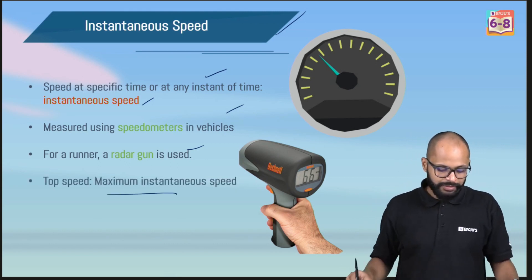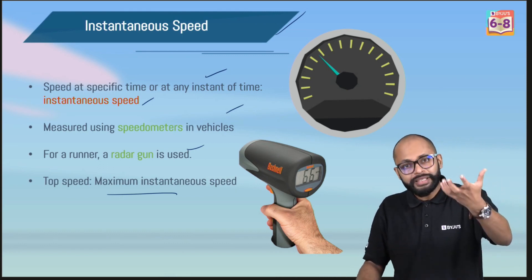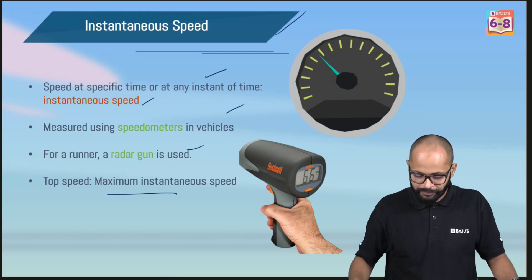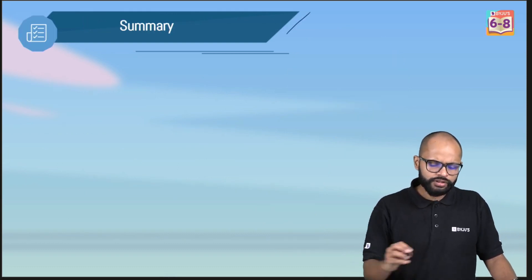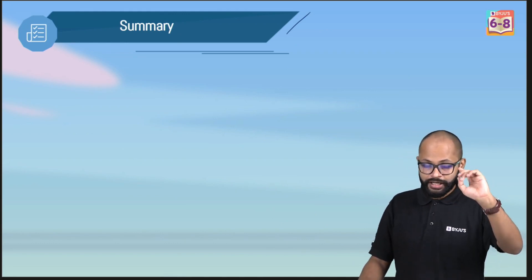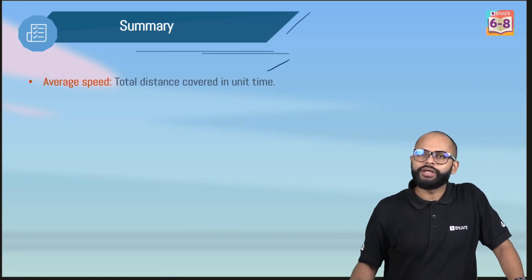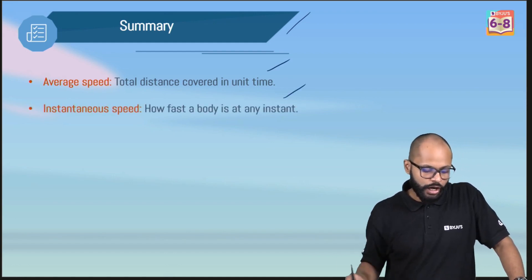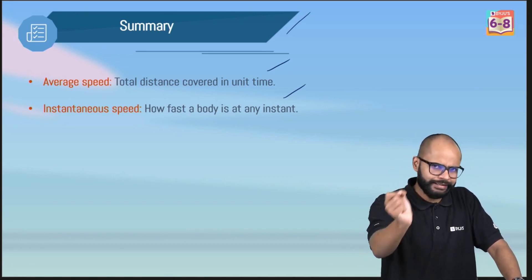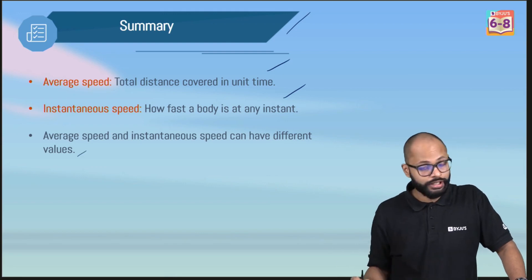Top speed is the maximum instantaneous speed. Wherever you say top, top means high. It's a maximum instantaneous speed. And that is for Usain Bolt. So how to summarize everything? Average was different and top speed was different. If you summarize everything, average speed is the total distance covered in unit time. Instantaneous speed is how fast a body is at any instant. Average speed and instantaneous speed can have different values.